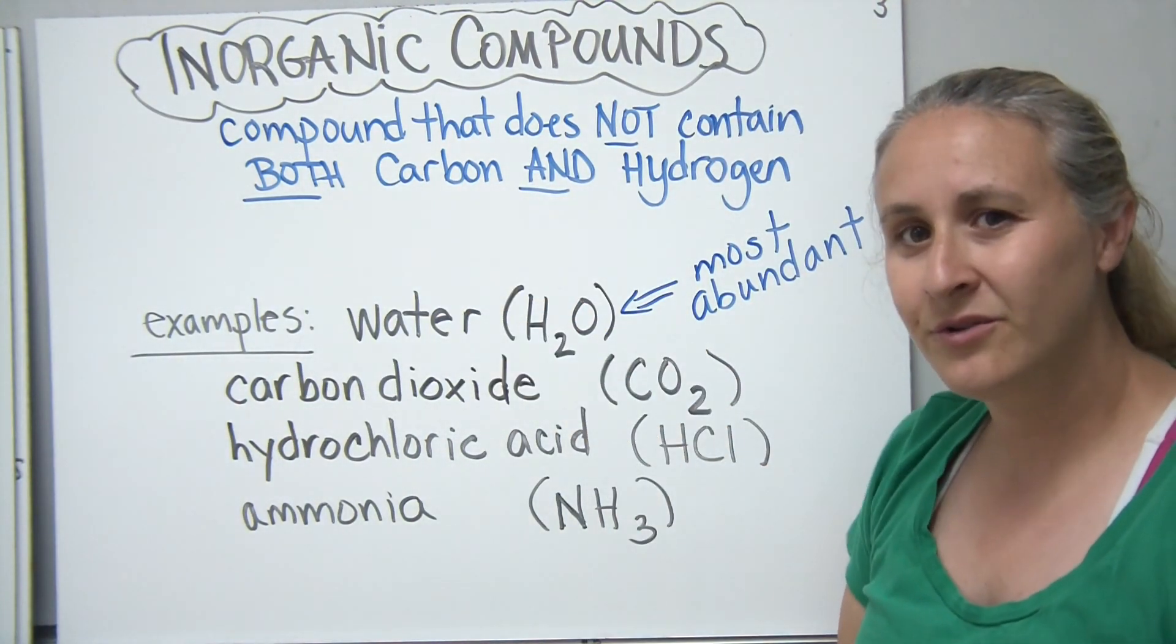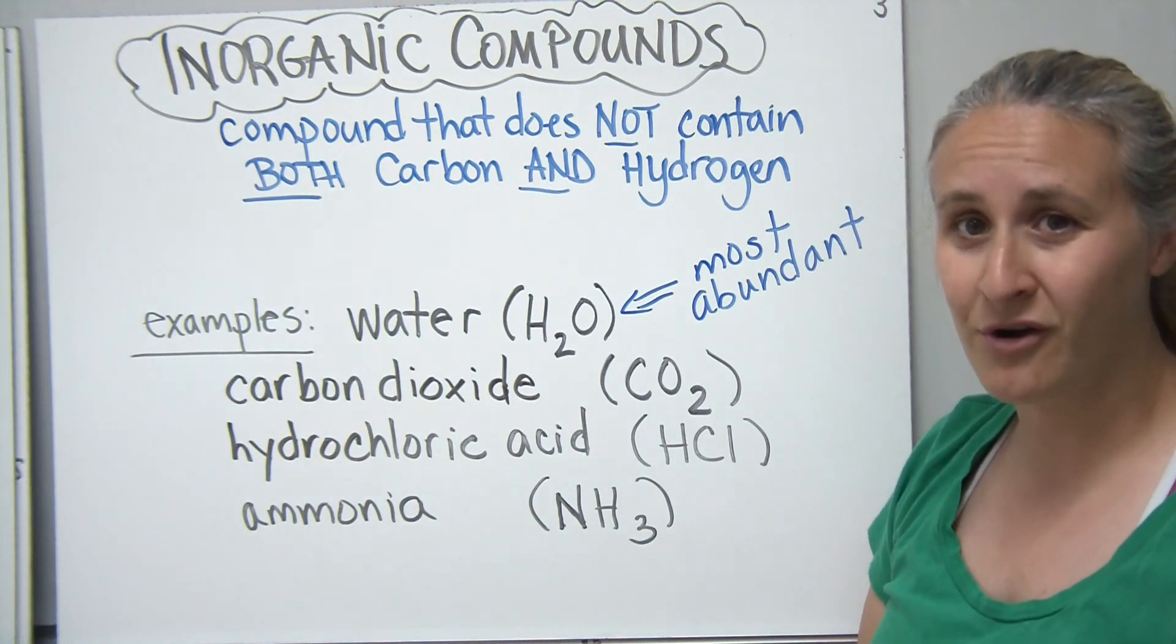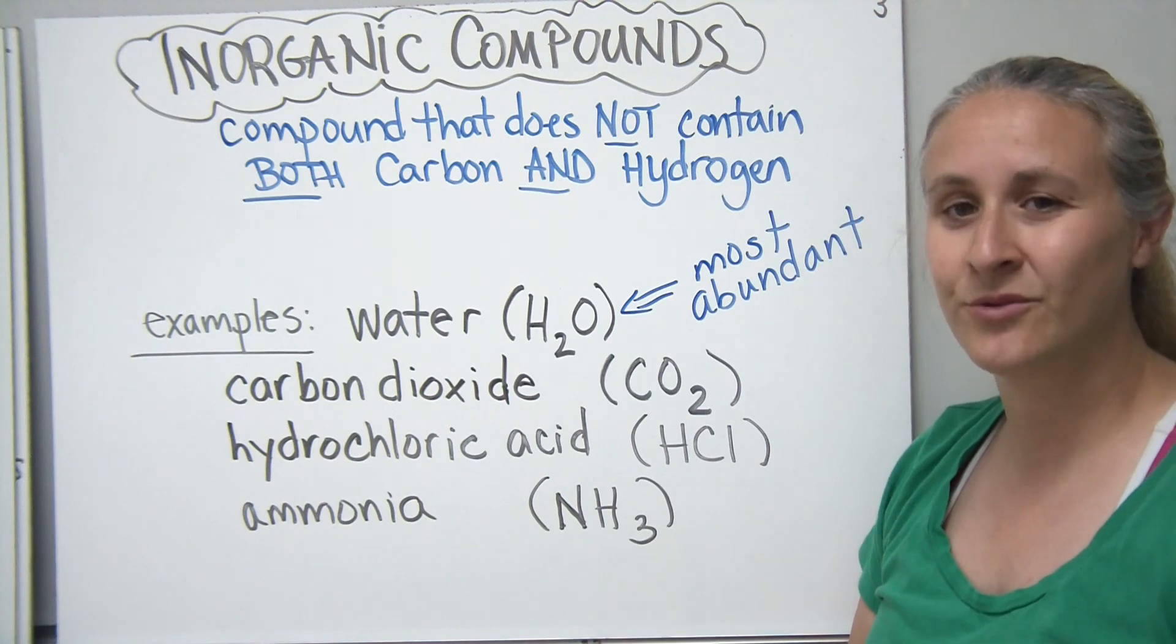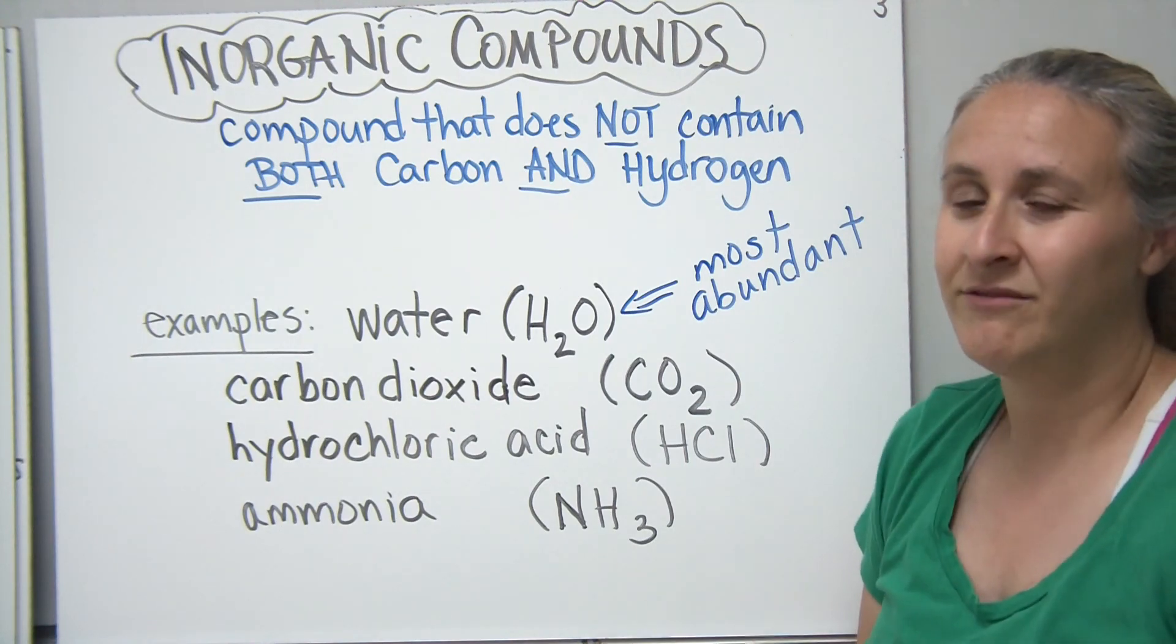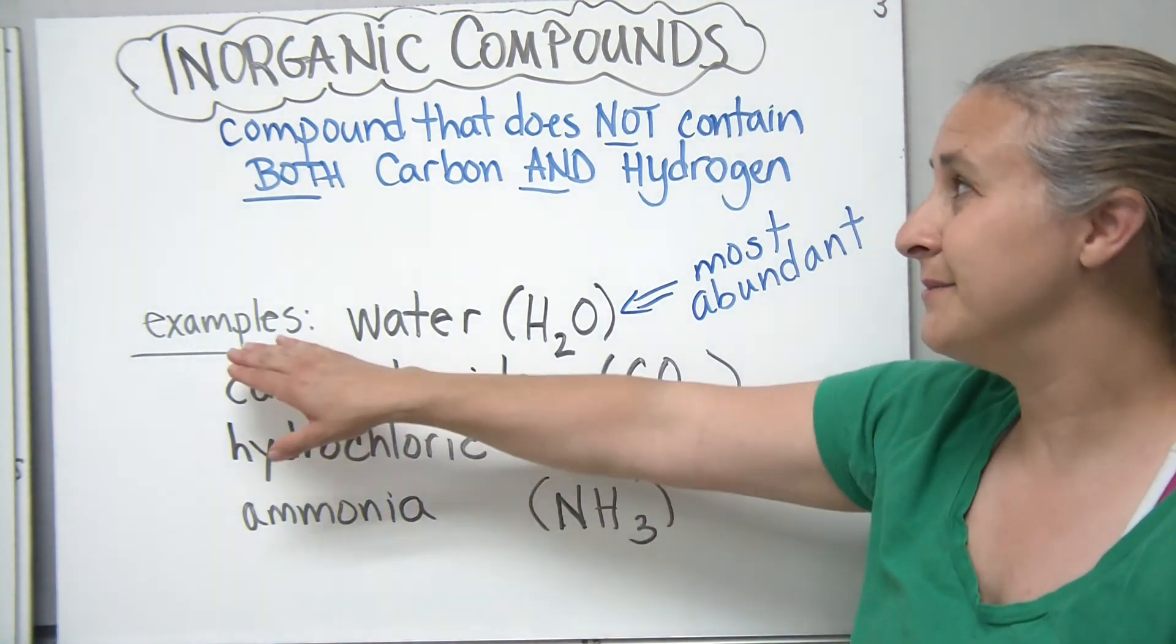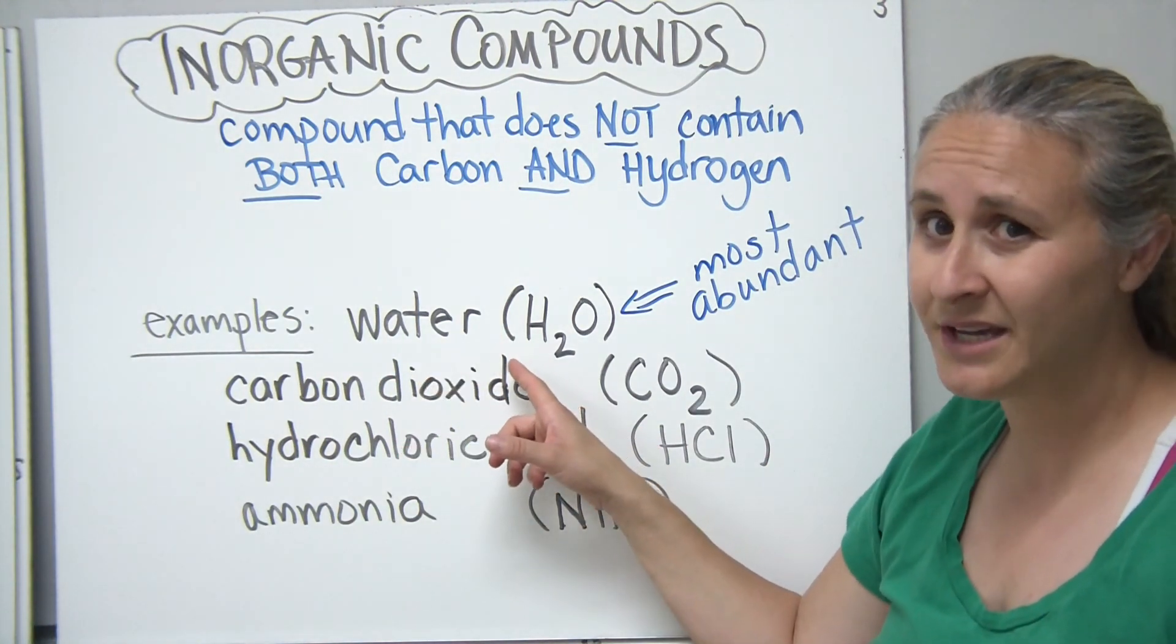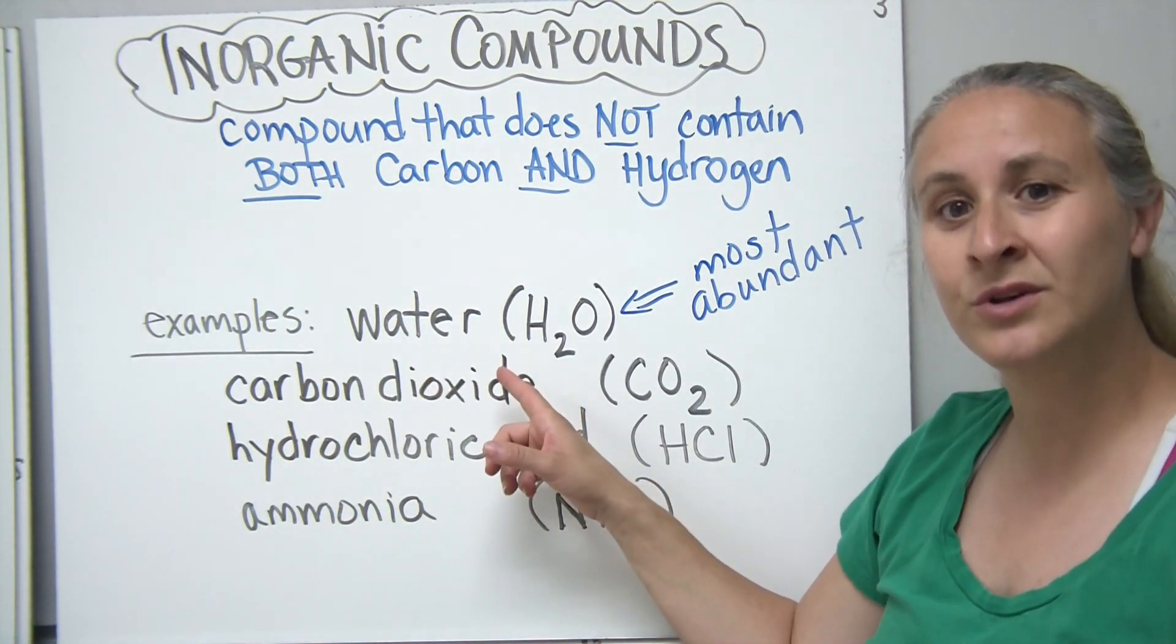So when we talk about inorganic compounds, they may have carbon or they may have oxygen. But the key is in order to be inorganic, they couldn't have both in the compound. So some examples of the inorganic compounds would be water. It has hydrogen in it. But since it doesn't also have carbon, it's considered to be inorganic.